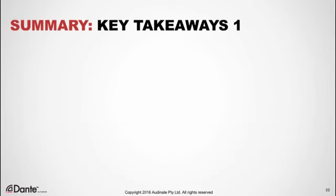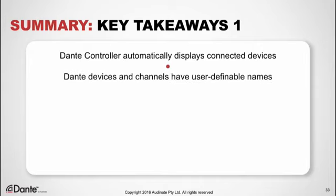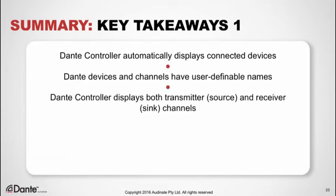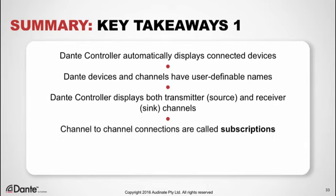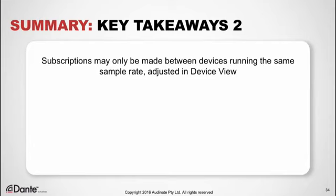Let's summarize with a few takeaways. Dante Controller automatically discovers and displays connected devices. Dante always displays devices with user-definable names. For each device, Dante Controller displays both transmitter (source) and receiver (sink) channels. Channel-to-channel connections are called subscriptions, and subscriptions are made and deleted by simply clicking at the intersection of transmit and receive channels in the grid routing view.